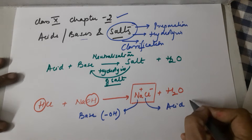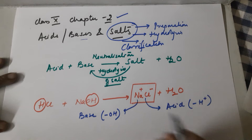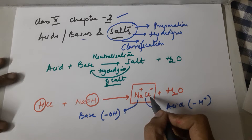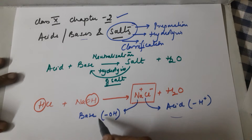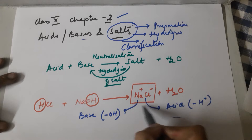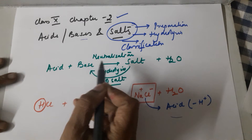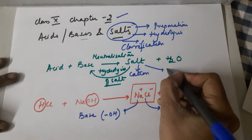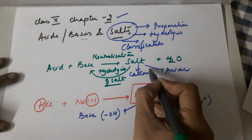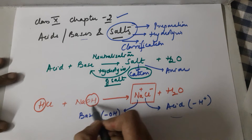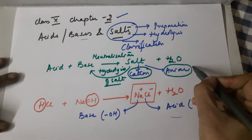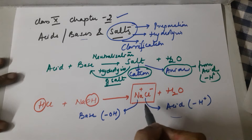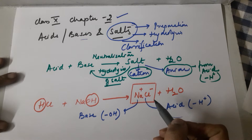So, the acid loses H⁺ to give you the anion of the salt, and the base loses the hydroxyl to give the cation of the salt. A salt has two components: the cation is always obtained from the base by loss of OH⁻, while the anion is always obtained from the acid after it loses the proton. From any given salt you can identify which acid and which base were used.